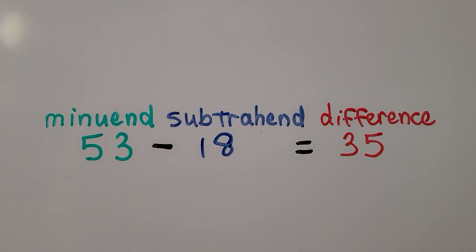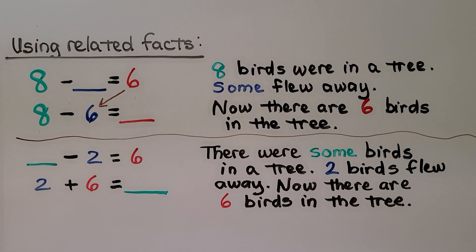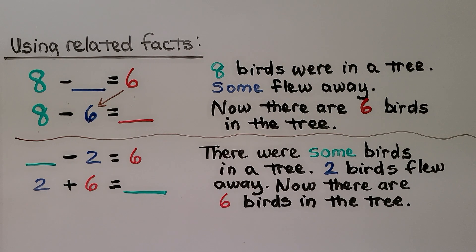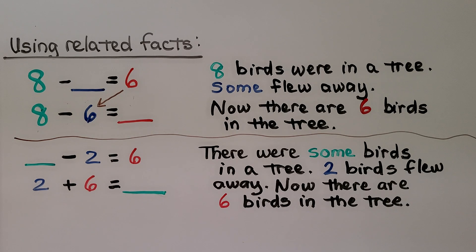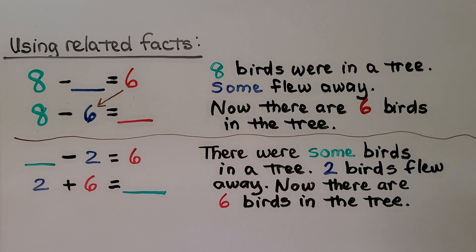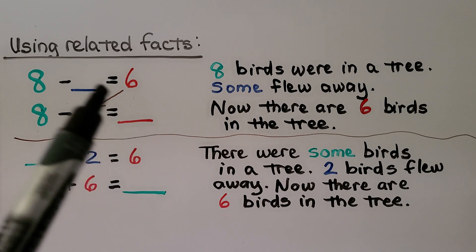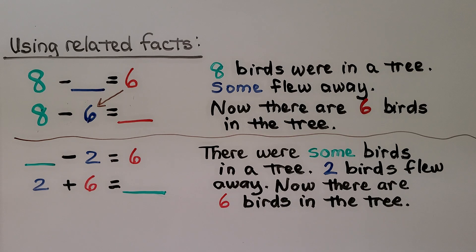Remember: in a subtraction problem, the first number is the minuend. We take away the subtrahend and it equals the difference. When solving word problems and writing number sentences, we can use related facts. Eight birds were in a tree — that's our minuend, eight. Some flew away; now there are six birds. We can write 8 minus 6 equals some number. Eight minus six is equal to two, which means eight minus two is equal to six.